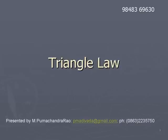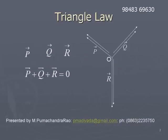Triangle law. Suppose three vectors p bar, q bar, r bar are acting at a point O, such that p bar plus q bar plus r bar is equal to zero.